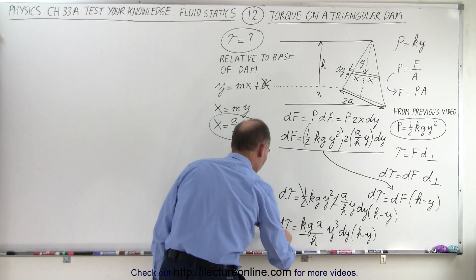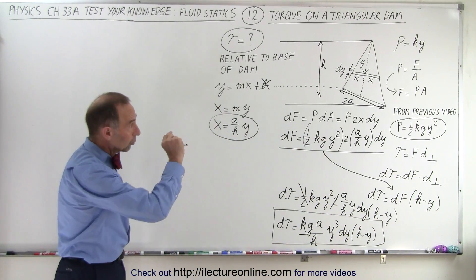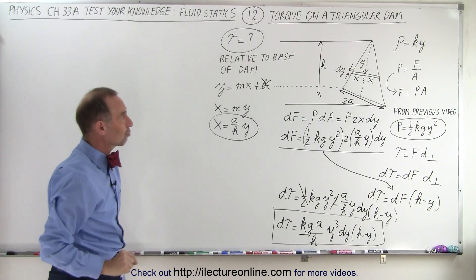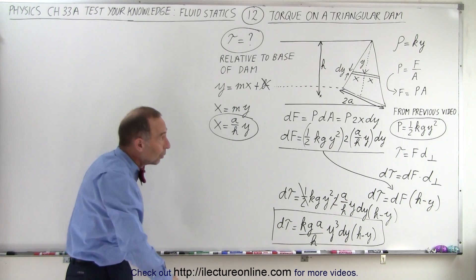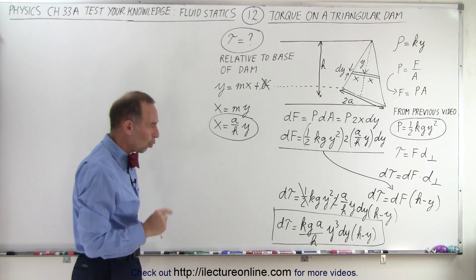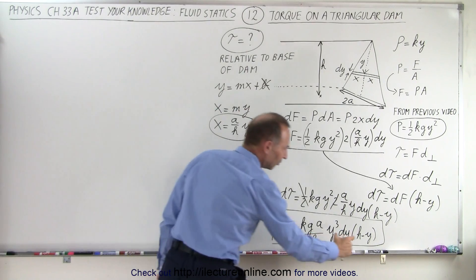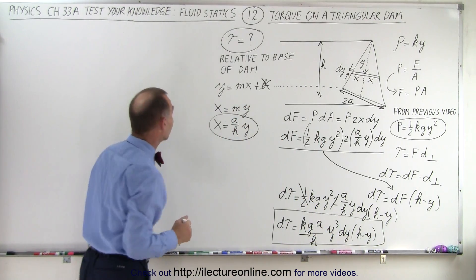And now notice we have defined a small amount of torque, torque for that little strip over there that's this far above the base of the dam. Now all we have to do is integrate across the entire dam and we'll get the entire torque. Now notice since we have this H minus y there, we're probably going to end up with two separate integrals.